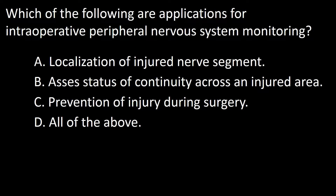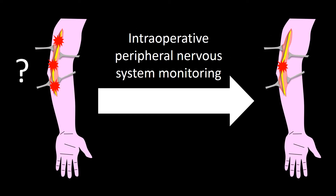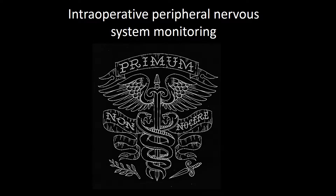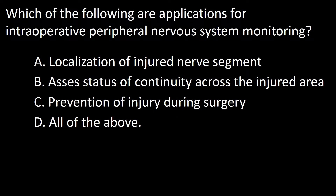Next question: which of the following are applications for intraoperative peripheral nervous system monitoring? A: Localization of injured nerve segments, B: Assess status of continuity across an injured area, C: Prevention of injury during surgery, D: All of the above. Intraoperative monitoring helps localize injured nerve segments, assess the status of continuity across an injured area in a nerve, and is used for prevention of injury during surgery. So the answer to this question is D.